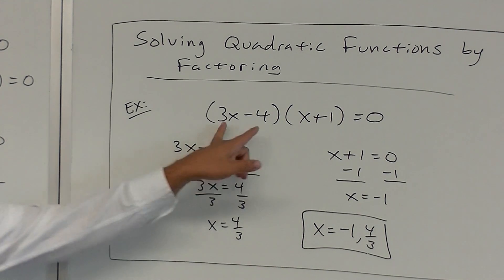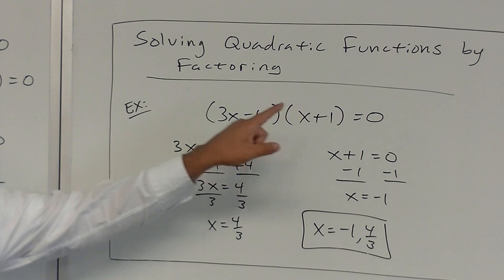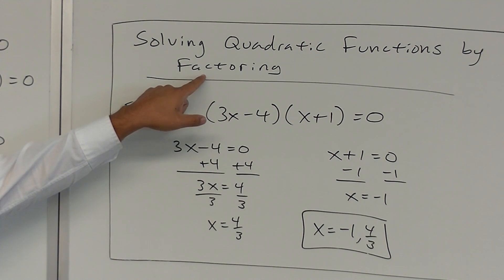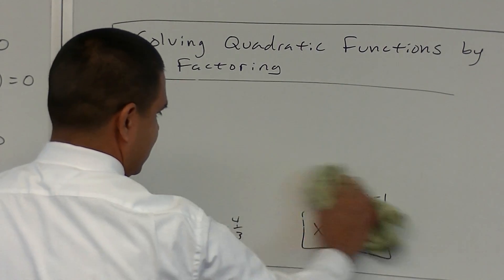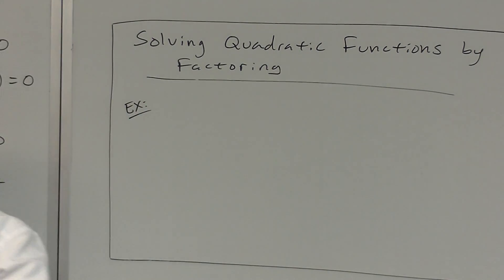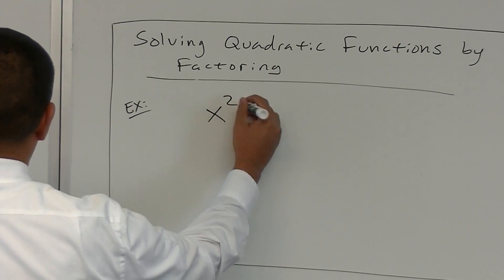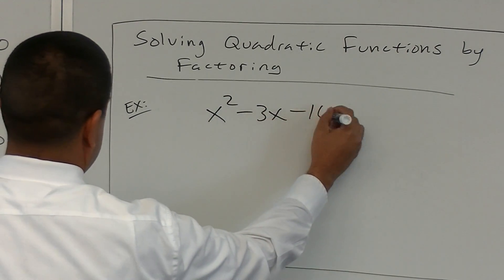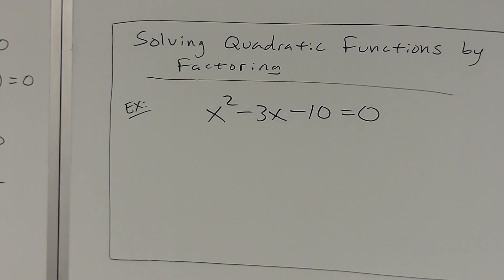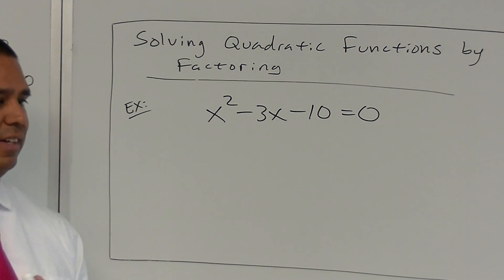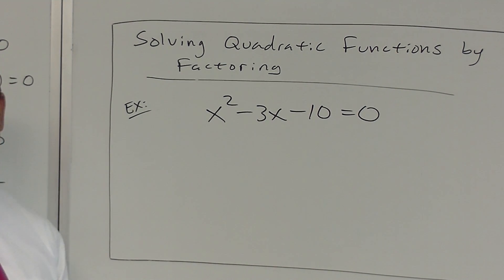So these were already factored for us. But the title of the notes says we have to know how to do it by factoring ourselves. So let's practice one that we need to factor: x squared minus 3x minus 10 equals zero.